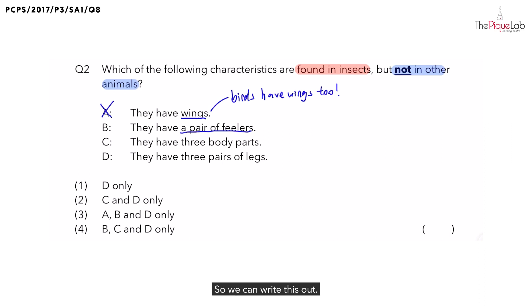So we can write this out: not only do insects have feelers, but prawns have feelers too. So because of that, is this a characteristic found only in insects? No. Which means can we choose B as our answer? Also no, so let's cross it out.